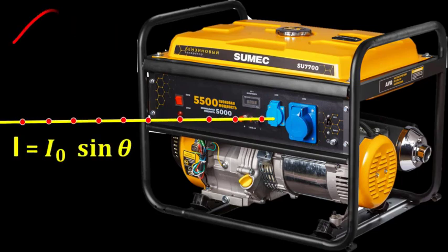The average value of AC current over a cycle is zero, which is a meaningless quantity.